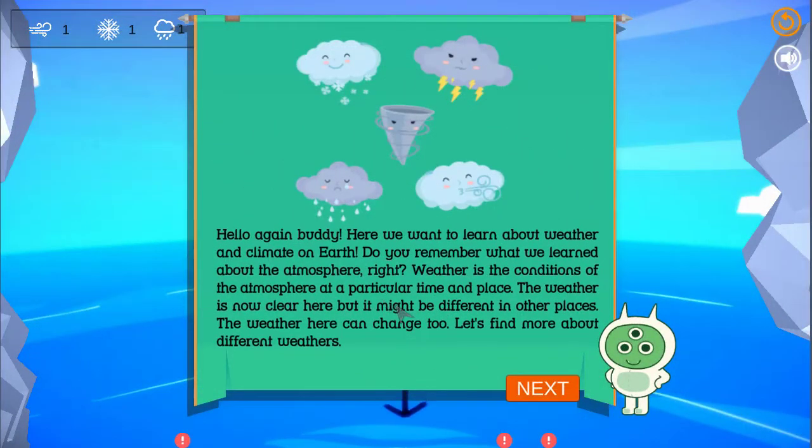Hello again buddy! Here we want to learn about weather and climate on Earth. Weather is the conditions of the atmosphere at a particular time and place. The weather is now clear here but it might be different in other places. The weather here can change too. Let's find more about different weathers.